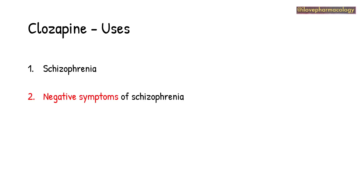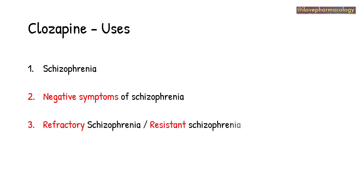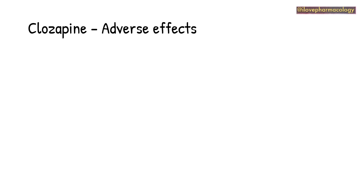Coming to the indications of clozapine: being an atypical antipsychotic agent, it is useful in the treatment of schizophrenia. In particular, it is very much useful in the treatment of negative symptoms associated with schizophrenia, and it is very helpful in the treatment of refractory schizophrenia — also called resistant schizophrenia — which is not responding to typical antipsychotic agents.